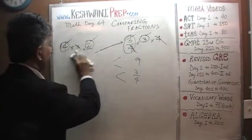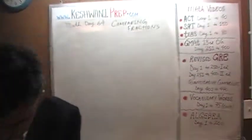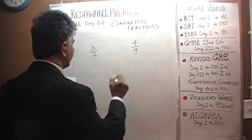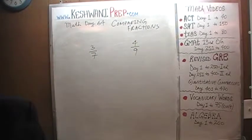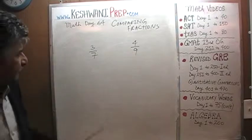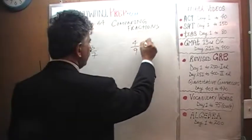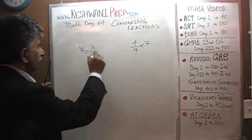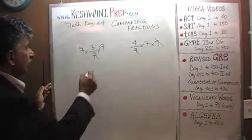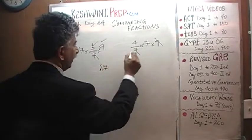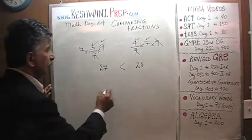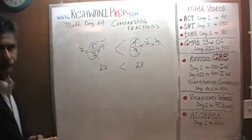Let's do one more — this time you do it yourself. Pause the video and do it yourself right away: 3/7 versus 4/9. Same exact theory, nothing has changed. Let's multiply both fractions by 7 — the 7 disappears — then multiply both fractions by 9 — the 9 disappears. We end up with 3 times 9, which is 27, and 4 times 7, which is 28. Since 28 is more than 27, therefore 4/9 is more than 3/7.